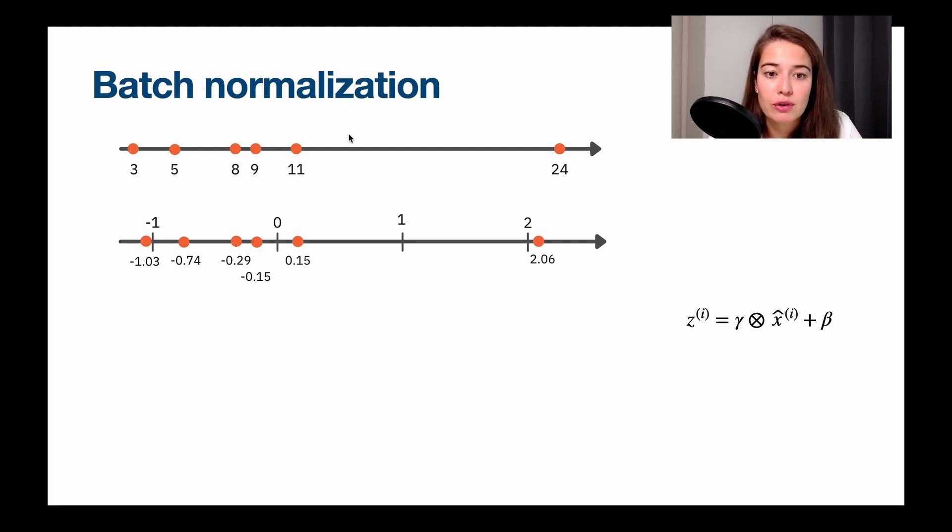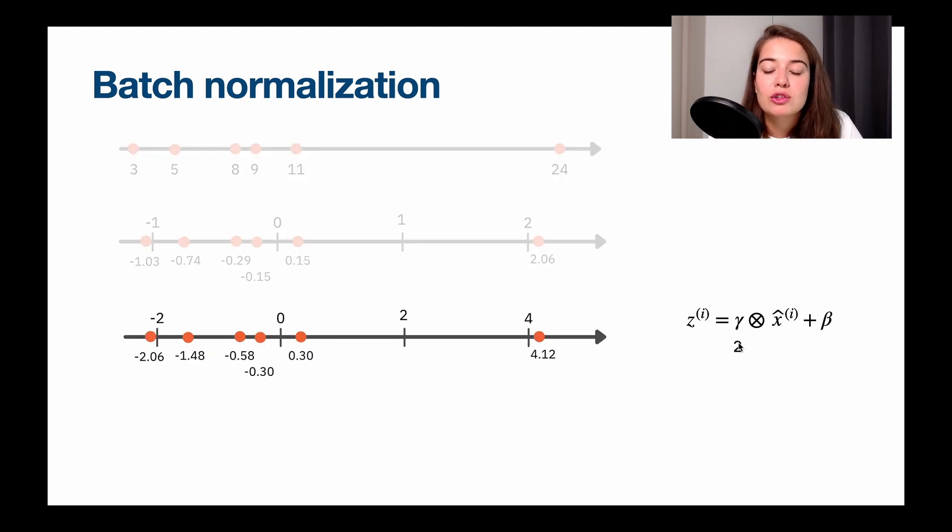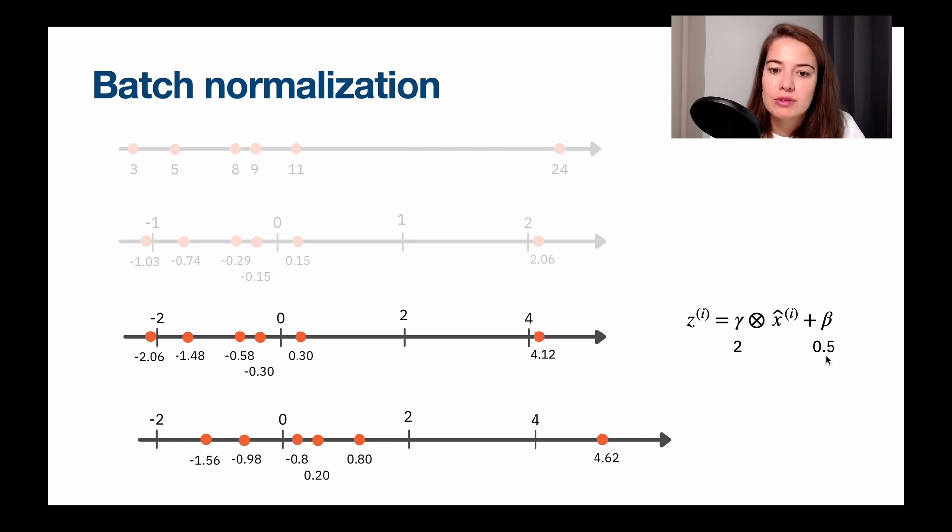Let's see how this works. So as I said, this is a normalized version of our original values. And if we, let's say, want to rescale them by 2, we basically multiply them by 2. And then this is what we would have. If we want to offset them, then what it would mean is it's going to be moving on the axis that it's on. So if we say, let's offset them by 0.5, then we're going to move them a little bit to the right. So that's how it would work.